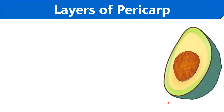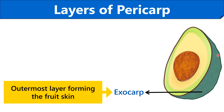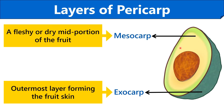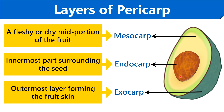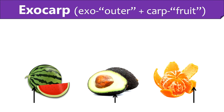Now we will study the layers of pericarp by using this diagram. The outer green section of avocado is called the exocarp layer that forms the fruit skin. The yellow mid portion of the avocado indicates the mesocarp or intermediate layer that can be sometimes dry or fleshy. The thin brown layer of avocado indicates the endocarp layer that is the innermost layer surrounding the seed. In avocado, this endocarp layer is difficult to differentiate as it appears as a thin film over the seed.